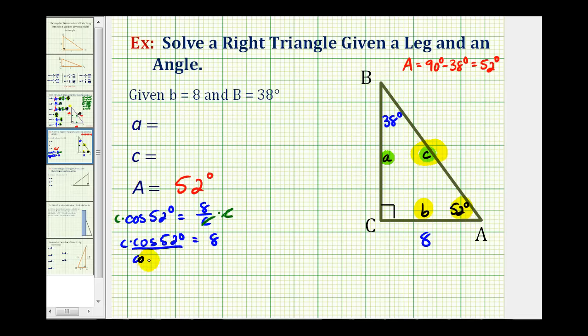Now we'll divide both sides by cosine 52 degrees. So C is equal to this quotient here, so now we'll go to the calculator.